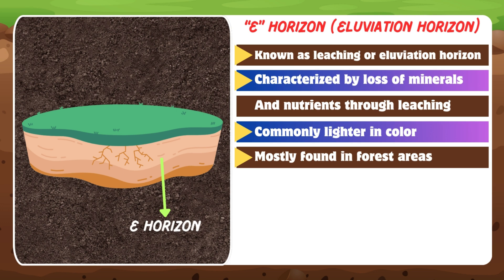You may wonder where the leached minerals go and whether there is any stoppage of the minerals lost from the E horizon. The answer lies in the B horizon.